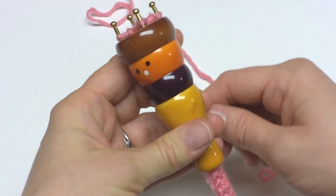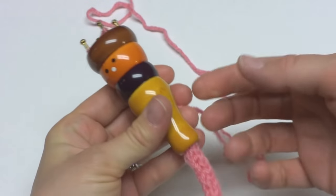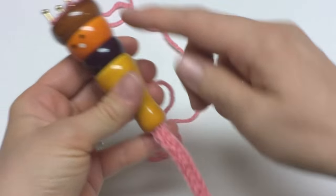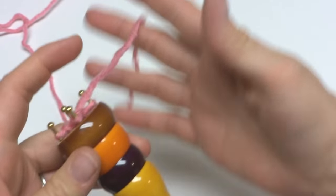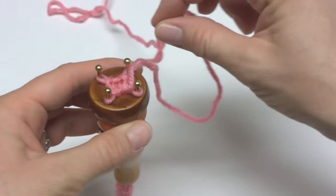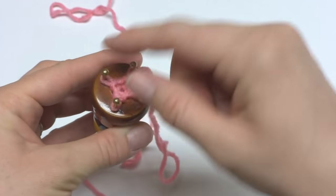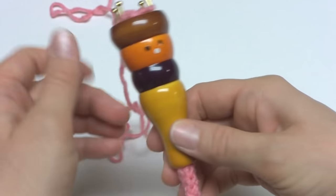I want to show you how to bind off, or in other words, get this off of your spool. You can do this one of two ways. You can either cut the yarn and use a needle and just go into all these loops and kind of sew it together. Or...